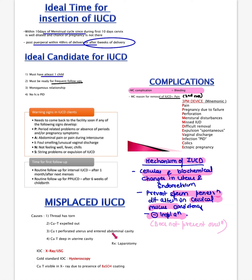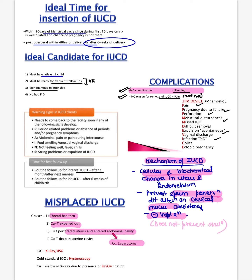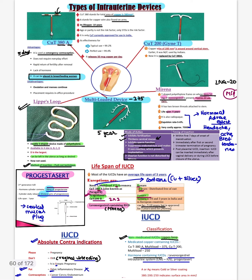Ideal IUCD candidate: must have at least one child, ready for frequent follow-up, in a monogamous relationship, and no history of PID. Most common complication is bleeding; most common reason for removal is pain. Other complications: perforation, pregnancy, menstrual disturbances, expulsion, vaginal discharge. For a misplaced IUCD where thread is not visible, investigation of choice is X-ray or ultrasonography; gold standard investigation is hysteroscopy.